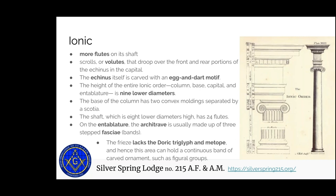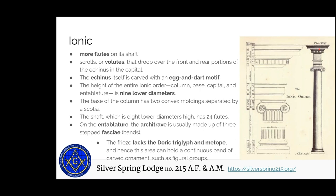Moving on from Doric, you have Ionic columns, which are pretty distinct — they have more flutes on the shaft that are a bit easier to see, and they have these scrolls or volutes. If you see scrolls on a column, you can say 'that's Ionic' — nothing else really has that plain scrolling design. The echinus itself is carved with an egg and dart motif. The entire height of column, base, and capital is nine lower diameters, so you can have a taller, slightly narrower column.